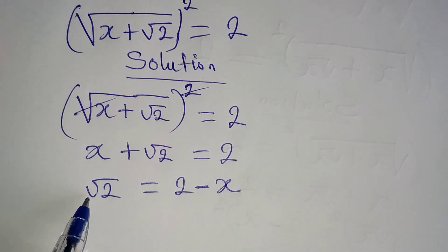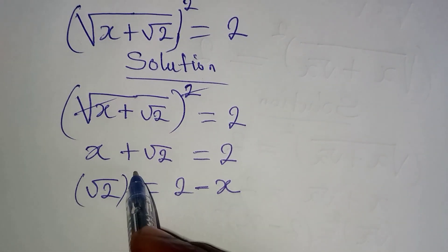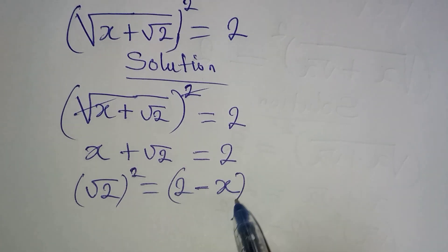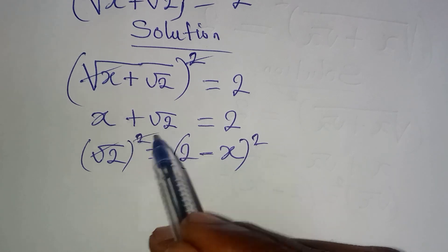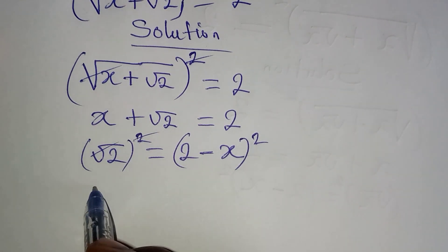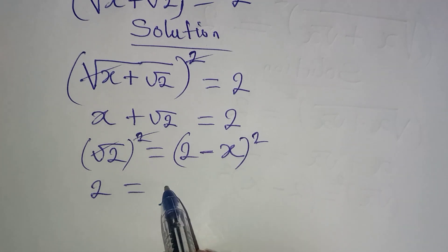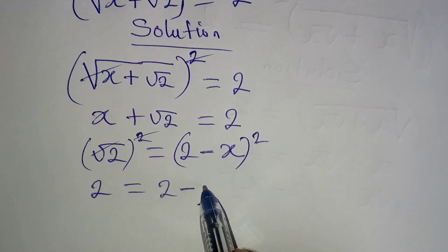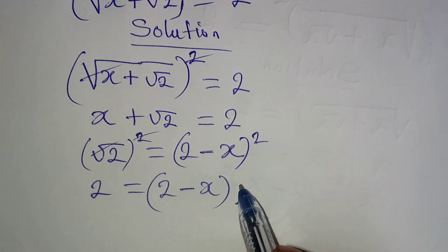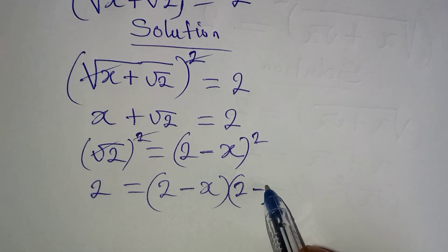Now I want to remove the square root as I square both sides. And then square root and square can always cancel each other. So 2 will be equal to 2 minus x into bracket 2 minus x.